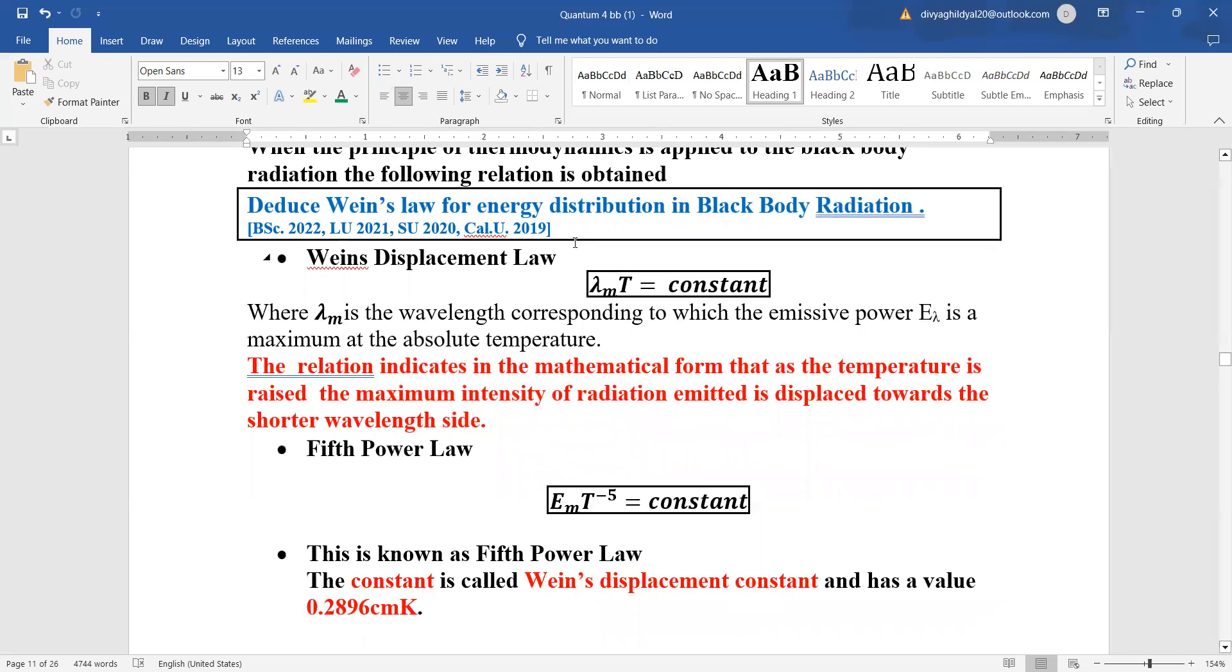Wayne's displacement law, lambda m into t is a constant where lambda m is the wavelength corresponding to the emissive power of energy at that specific wavelength. The relation indicates in the mathematical form that as the temperature is raised, the maximum intensity of radiation emitted is displaced towards the shorter wavelength side.